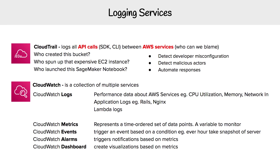Some other use cases include detecting developer misconfiguration. We could also use it to detect malicious actors — so if someone got into our account, CloudTrail is going to give us an idea of what is going on. We could also automate responses, so maybe every time someone created a bucket you wanted to trigger something — that's something we could do with CloudWatch Events using CloudTrail.